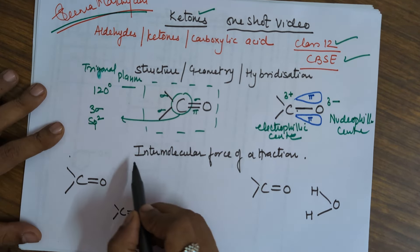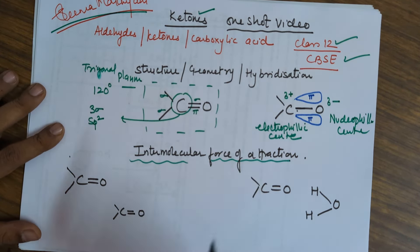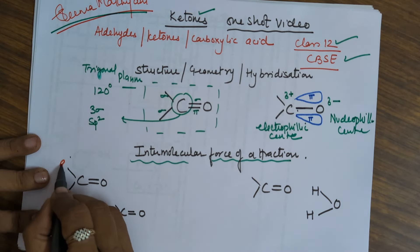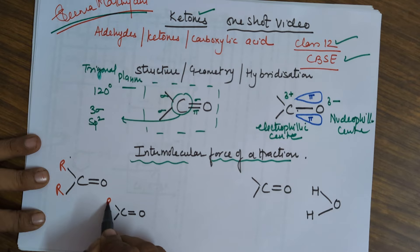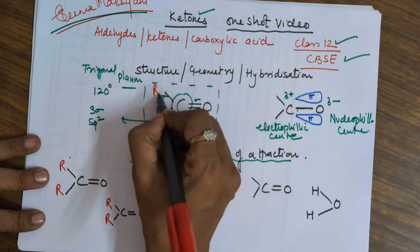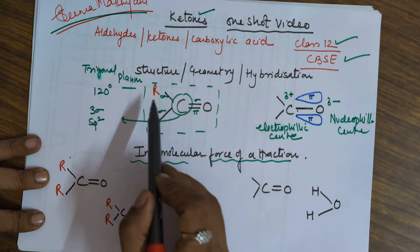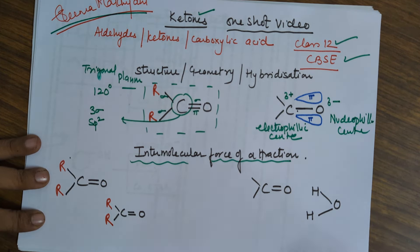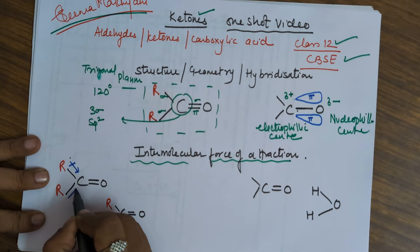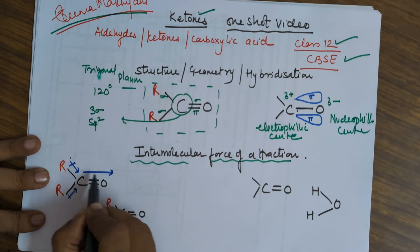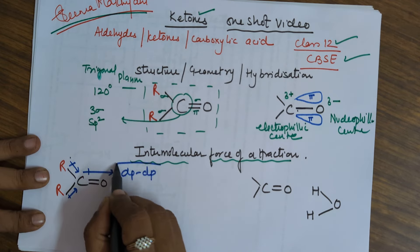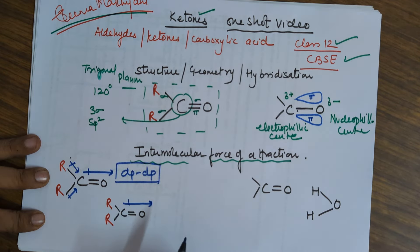Moving on to the intermolecular force of attraction in case of ketones. In ketones, carbon of the double bond O is always attached to R groups — no hydrogen. If it is hydrogen, it will become an aldehyde. In this particular compound, R gives electrons towards carbon and you have this as your dipole moment. Similarly here also there would be a dipole moment, so there is a definite dipole-dipole interaction between ketones.